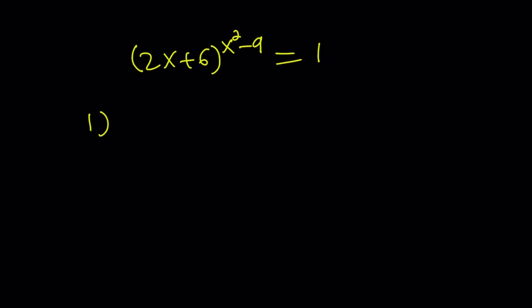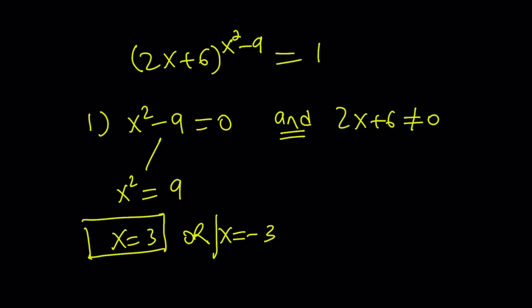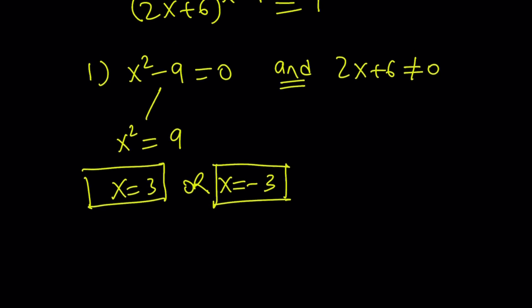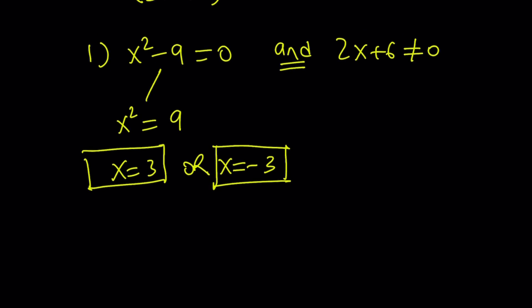And the first case is x squared minus 9 equals 0 and 2x plus 6 does not equal 0. Now it's important to use and here because we have to look at the intersection. So this gives us two solutions. x squared equals 9 gives us x is either 3 or negative 3. Notice that we're using or here because obviously those two cannot be happening at the same time.